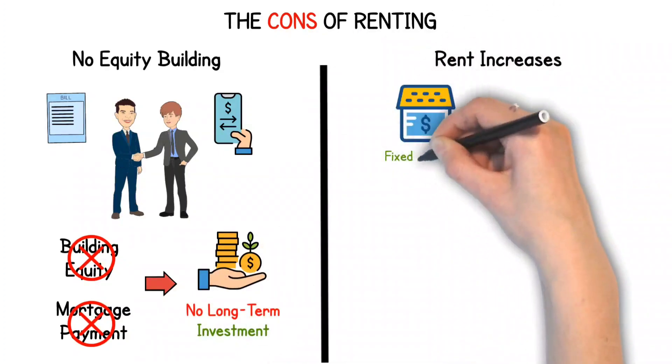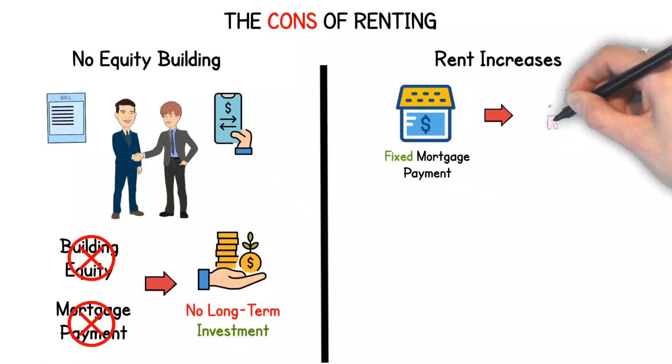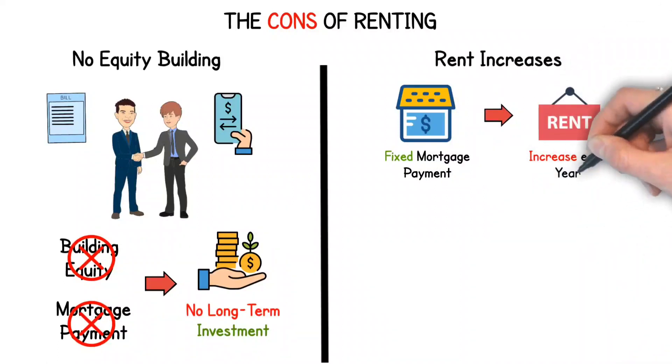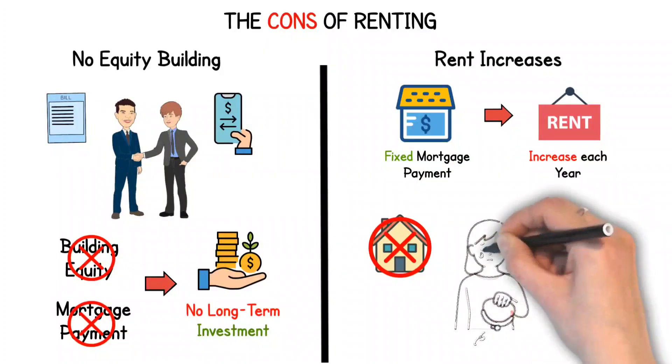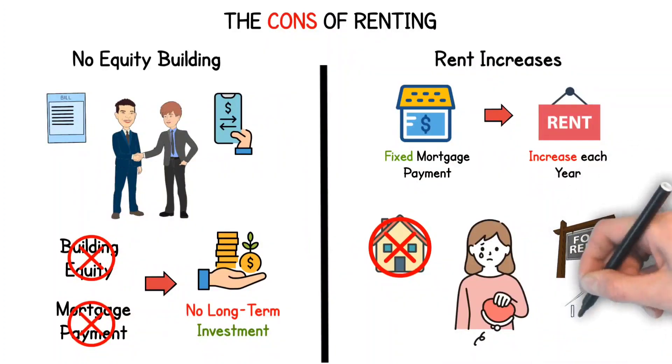Rent increases. Unlike a fixed mortgage payment, your rent can, and often does, increase each year. This lack of control over housing costs can make budgeting more challenging and can lead to affordability issues in areas where rents are rising rapidly.